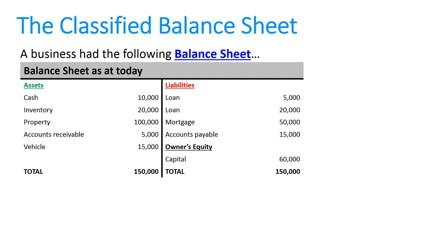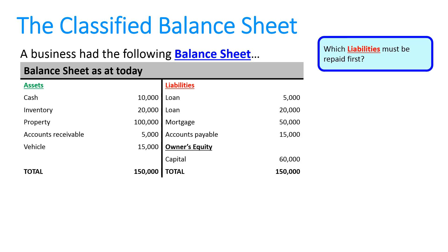Let's assume a business had the following balance sheet, so you can see its assets and liabilities and owners equity there. There's a lot of good information in that balance sheet. The problem is it doesn't help us answer questions like which of those liabilities must be repaid first.